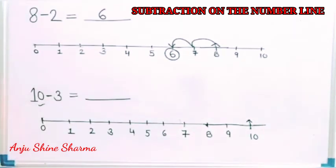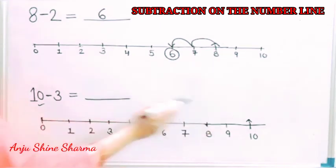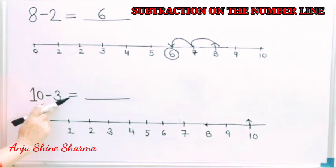And you know very well in subtraction we always use backward counting. So we move back three steps because the second number is 3.